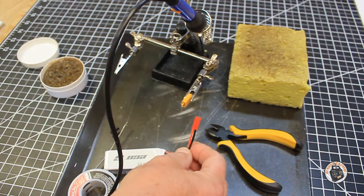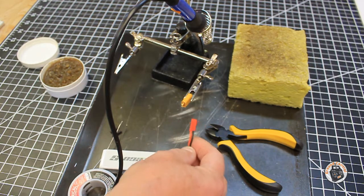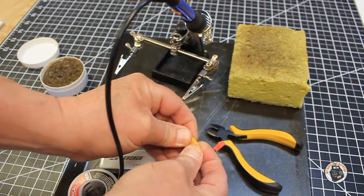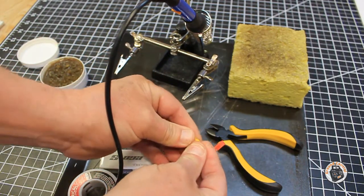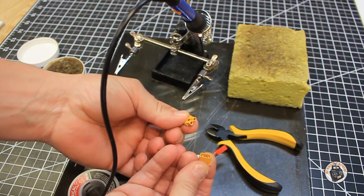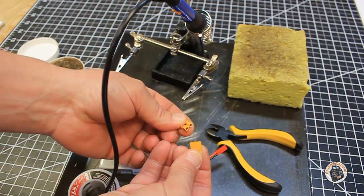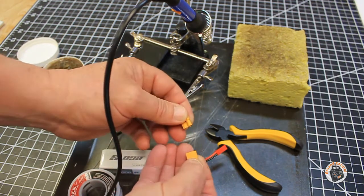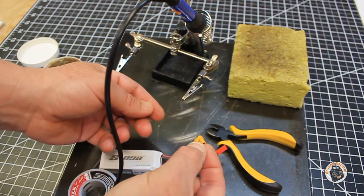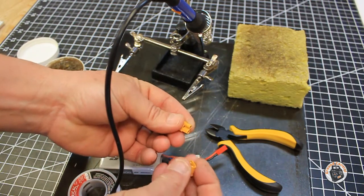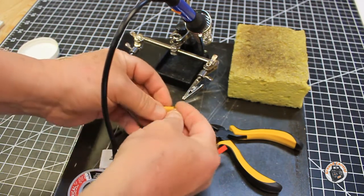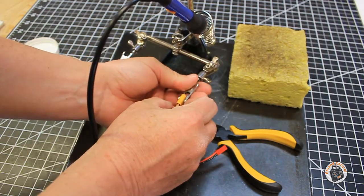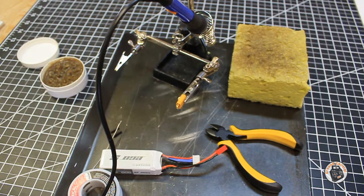We are going to be removing this JST connector and installing an XT30 connector. When you solder these, you want to make sure that you've got both pairs put together because this plastic will warp if it gets too hot, which means your pins will not be straight. So we've got the battery, we want the battery end of the connector facing us. I'm going to put these two mating connectors together to keep these pins straight while I am soldering them.